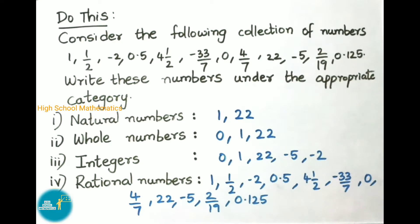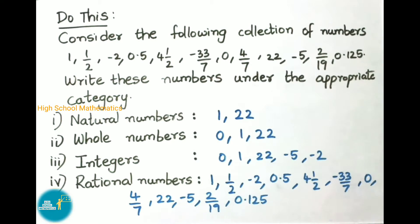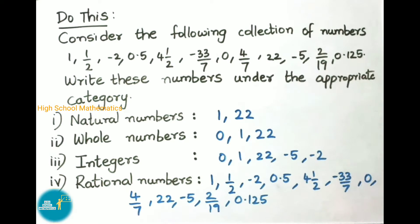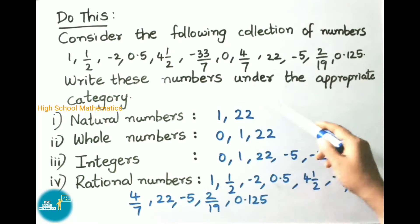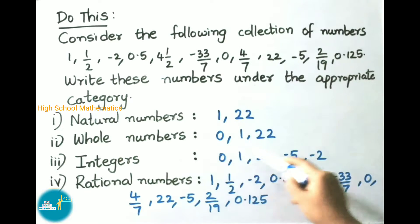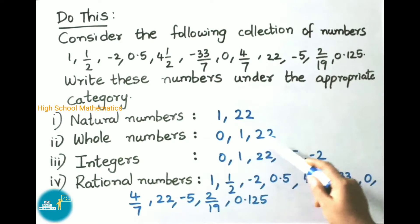Now all these numbers we have to write under the appropriate category. The first category is natural numbers. From the given collection, the natural numbers are 1 and 22. Next, whole numbers — we know whole numbers include 0, so along with the natural numbers we include 0. Therefore the whole numbers here are 0, 1, and 22.